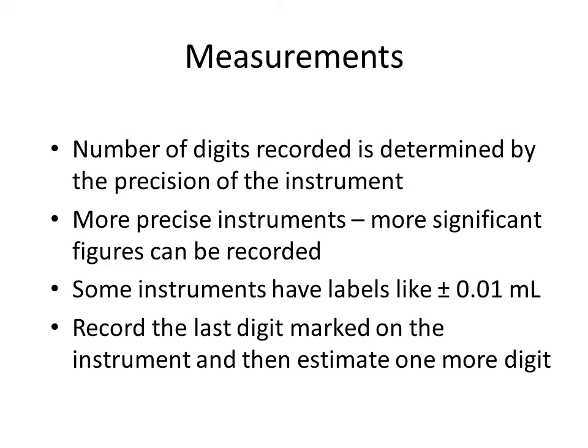Now, what we will do initially is look at measurements. When you go to take a measurement, the number of digits that you record is determined by the precision of the instrument. The precision of the instrument is how the instrument is marked. Some instruments will have a precision like plus or minus 0.01 milliliter. You will look at your instrument and find the smallest increment marked — whether that's tenths, ones, or hundredths. You always record to the last place that is marked, and then estimate one place more.